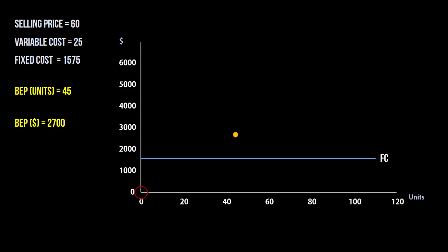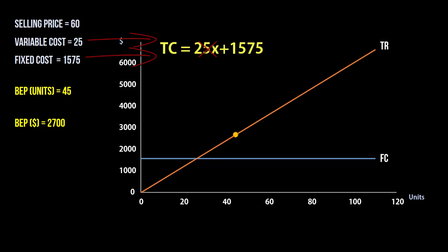For total cost, when zero units is produced, then total cost equals fixed cost. So the total cost line will start at fixed cost here and pass through the breakeven point.